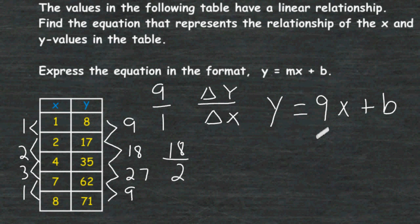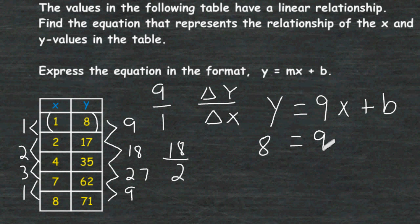The last thing we need to do is figure out what the b value is going to be. You can choose any ordered pair from within the function table and plug it into the corresponding x and y values. Let's take the first pair: we substitute y with 8, bring down our m value of 9, and multiply by the corresponding x value of 1, then bring down the variable b.